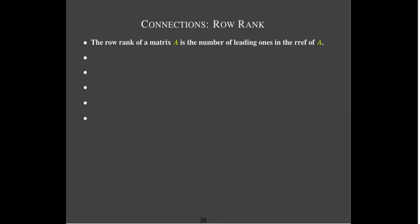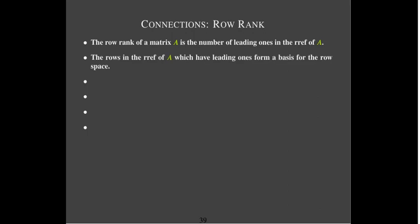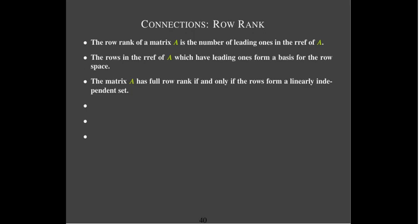Let's look at some of these statements in more detail. The row rank of a matrix is the number of leading ones in the reduced row echelon form of A. The rows in that reduced row echelon form which have leading ones form a basis for the row space. You have full row rank if and only if the rows form a linearly independent set. If they don't, you're going to get a row of zeros in the reduced row echelon form.